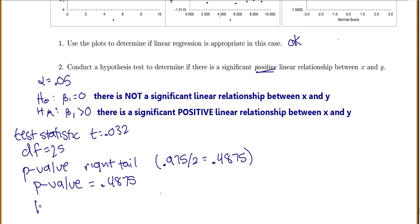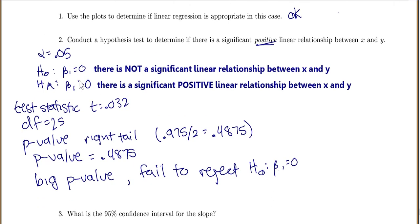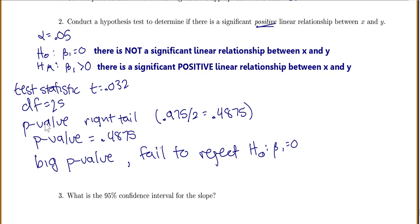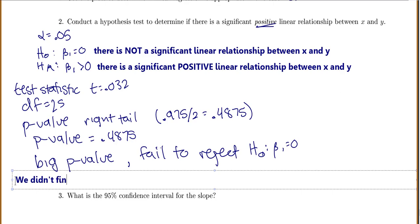Well, that is a very big p-value. So I will fail to reject my null hypothesis that beta 1 equals 0. And I would say we didn't find enough evidence to say that my slope is greater than 0.